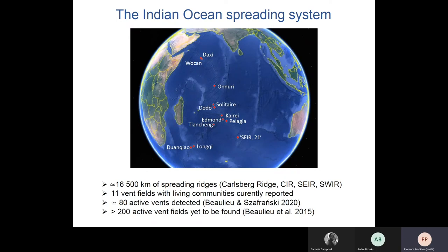Compared to other ridge systems, exploration efforts on Indian ridges are more recent and the number of known active vents supporting biological communities is relatively low, considering the extent of the spreading system which is more than 16,000 kilometers. To date, 11 vent fields are known and harbor faunal communities. About 80 active vents are currently listed in the InterRidge database, and in addition 200 sites are predicted based on spreading rates of Indian ridges, meaning nearly 300 active vents potentially supporting vent communities exist in the Indian Ocean.